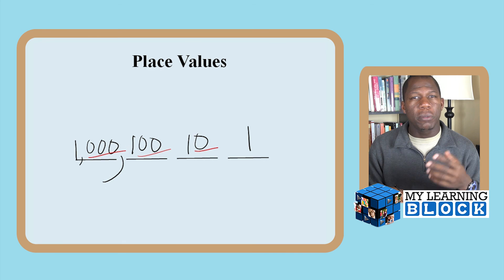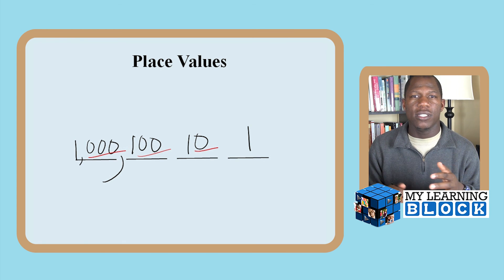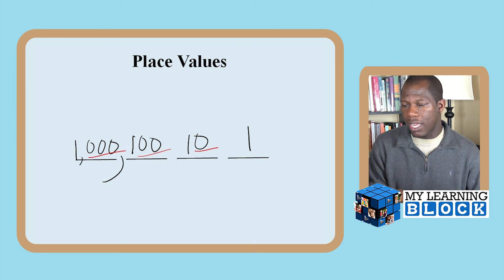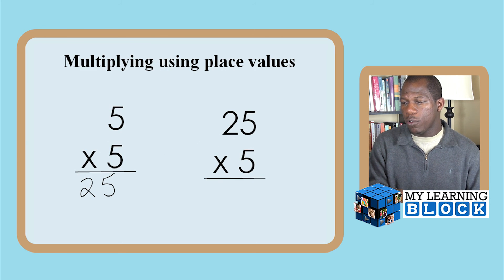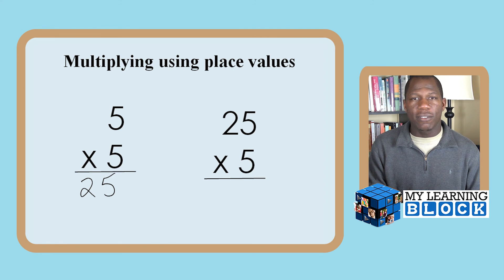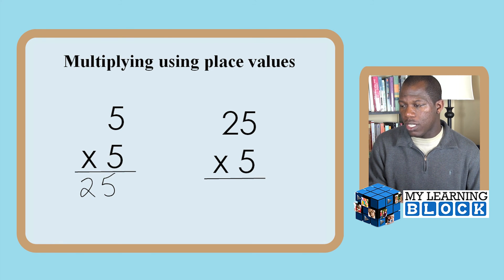What it does is it accounts for the value of the digit being multiplied. If your child sees five times twenty-five, they know what I'm going to do is multiply this number first by the number in the ones place, and then I'm going to multiply the number times the tens place.